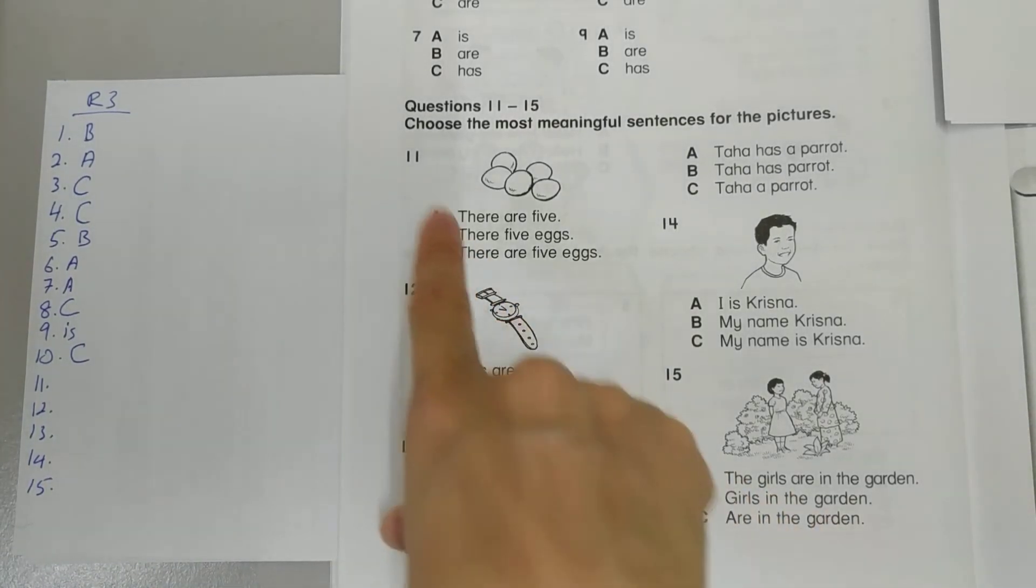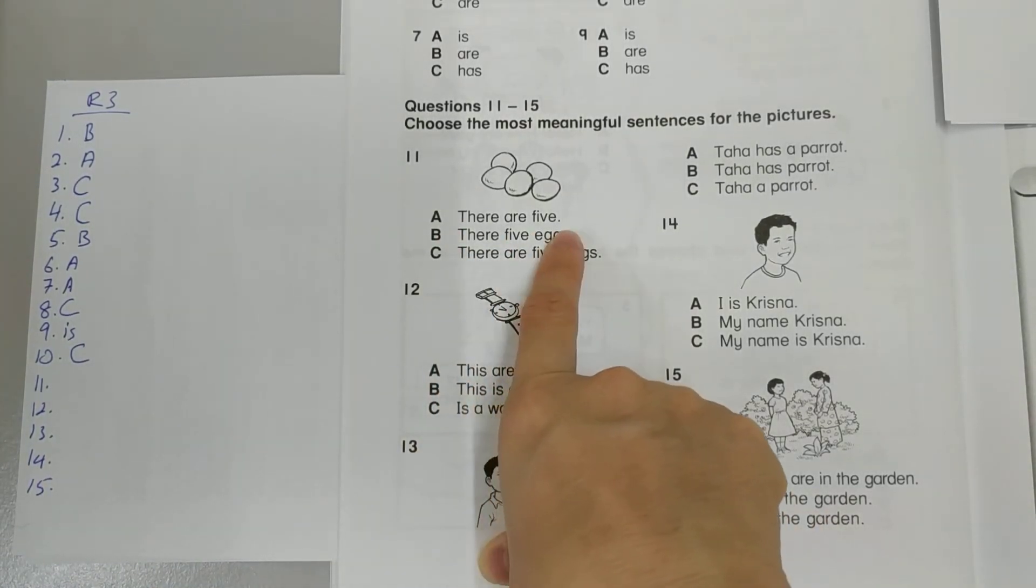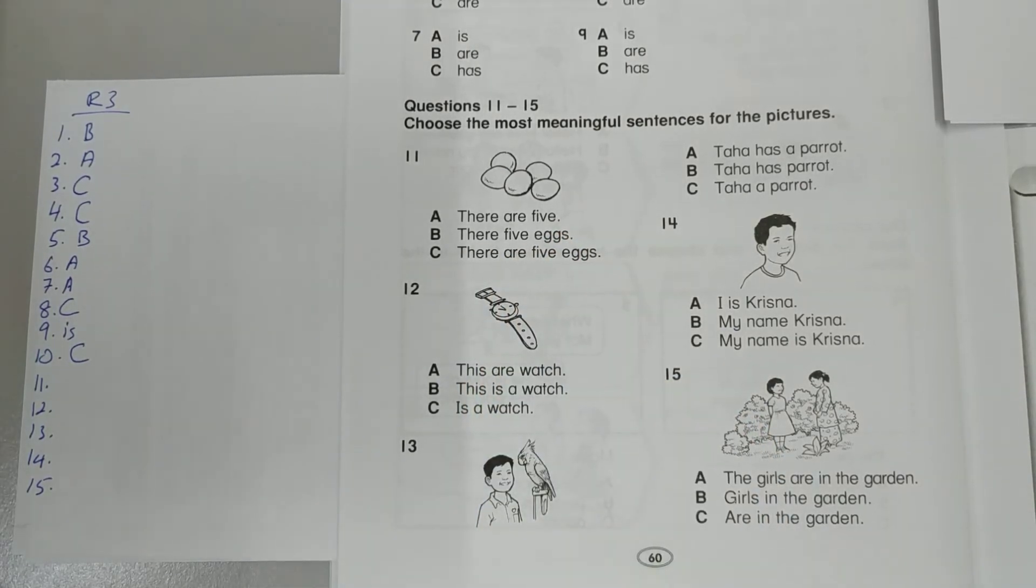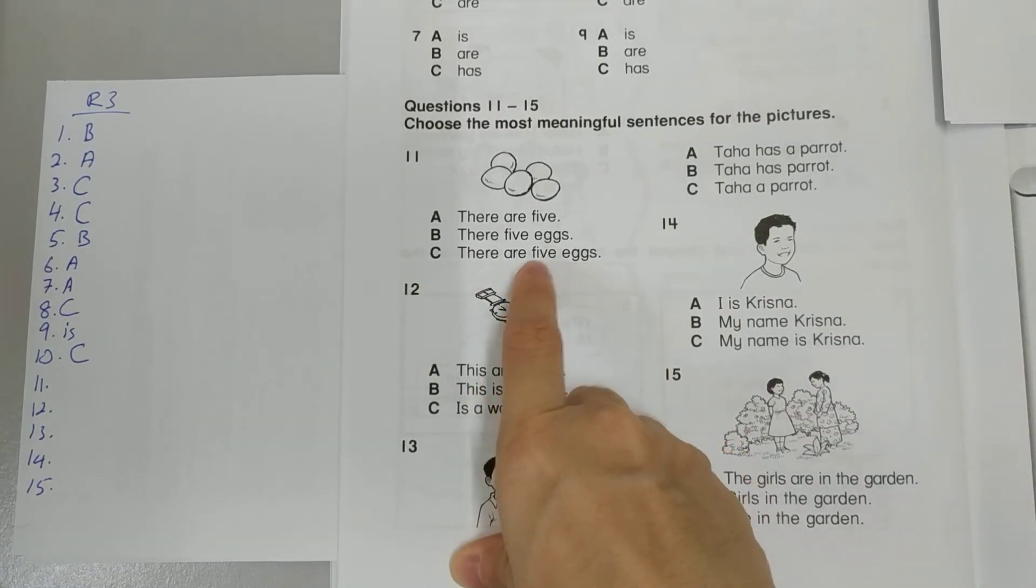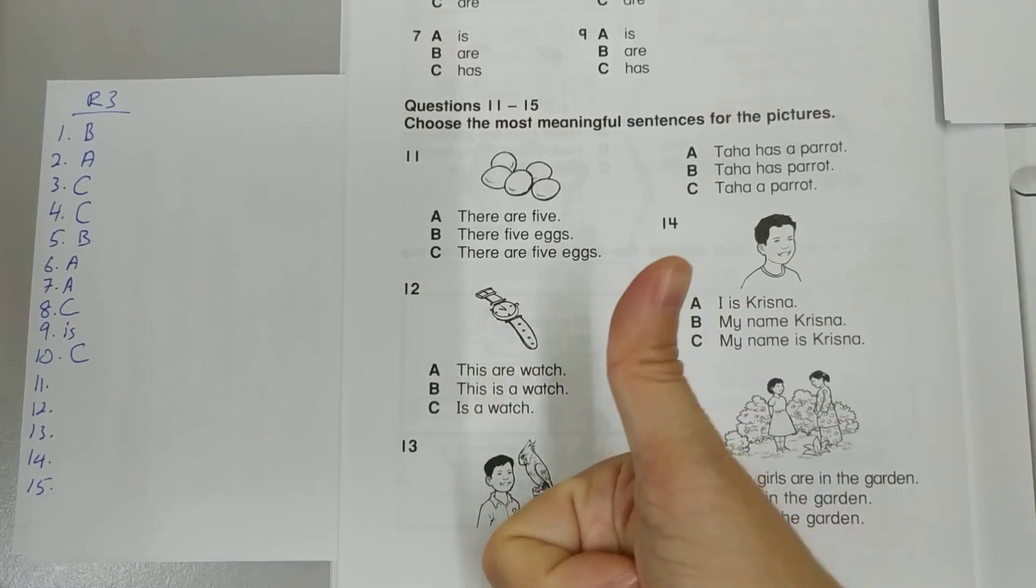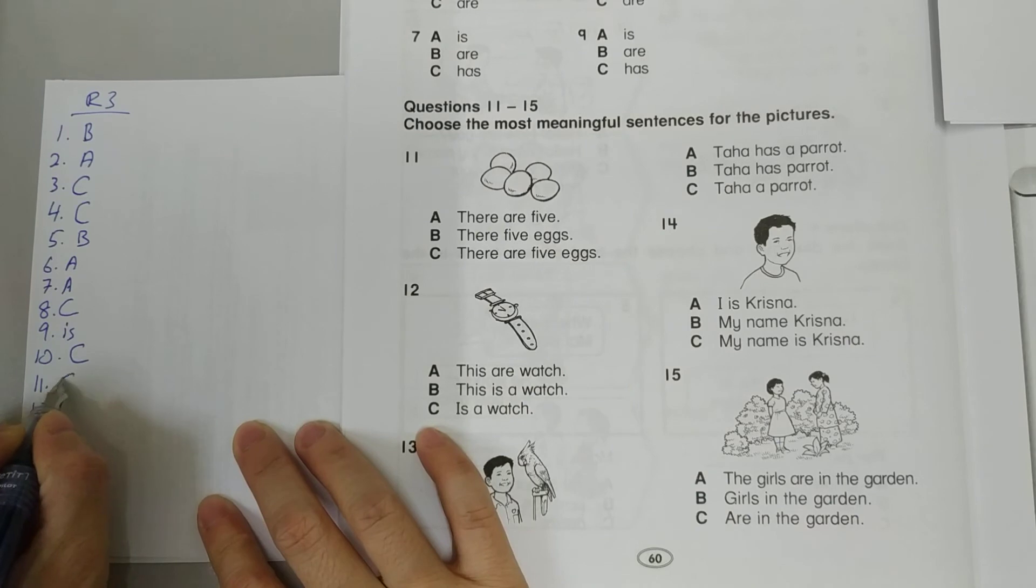So number 11. There are five. There's no meaning in that. There are five eggs. That is grammatically wrong. There are five eggs. That's correct. So 11 is C.